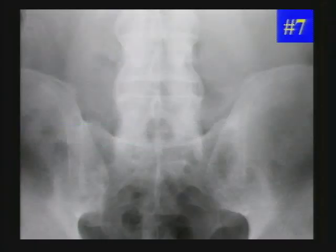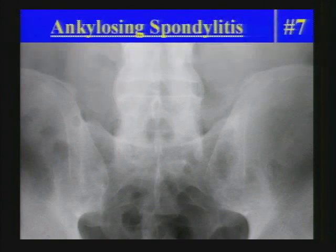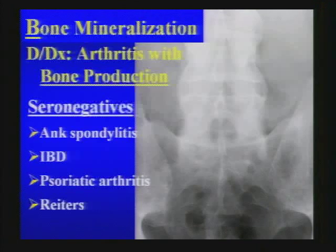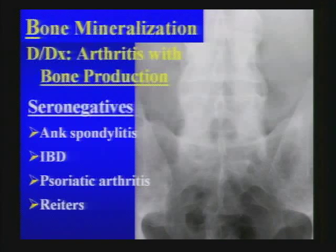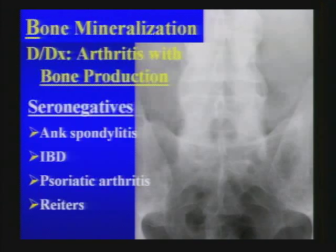In contradistinction to asymmetric psoriatic changes, ankylosing spondylitis shows a symmetric process. The differential for arthritis with bone production includes the seronegatives. Ankylosing spondylitis is the most common seronegative spondyloarthropathy. IBD can look similar. Psoriatic and reactive arthritis are also in the group.